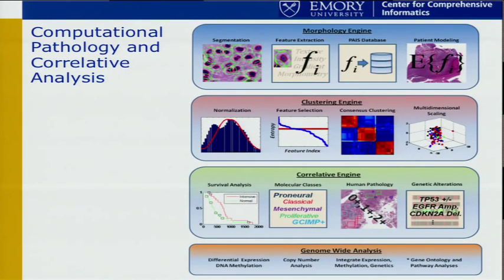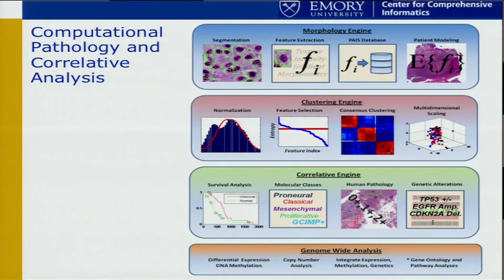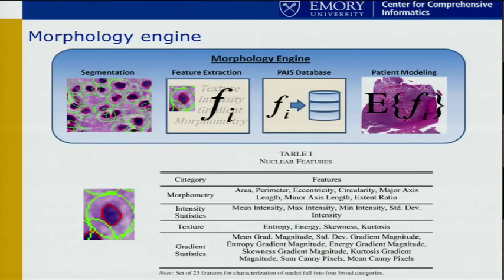This is a 5,000-foot view of the pipeline we've developed. We have several layers, but the general idea is that we use image analysis to capture a description of the cells in a whole slide image belonging to a patient. From those descriptions, we calculate a morphology signature for the patient. Then we cluster these morphology signatures — essentially clustering patients into different groups. Once you have those groups, you can do all kinds of correlative analysis, looking at outcome, significant differences in expression, et cetera.